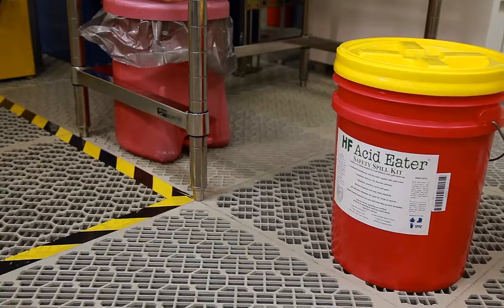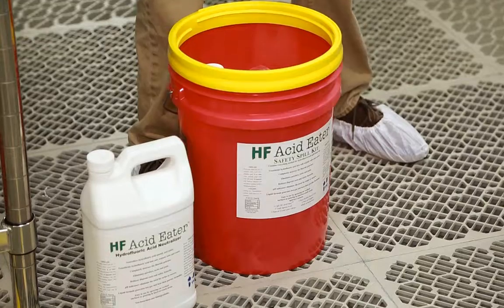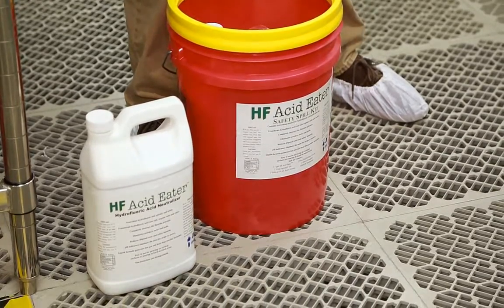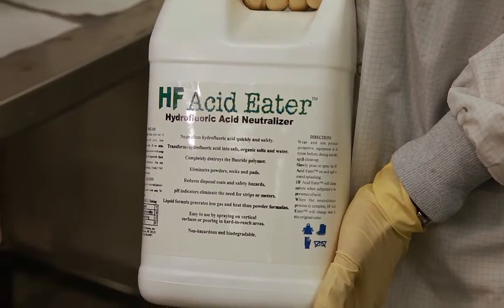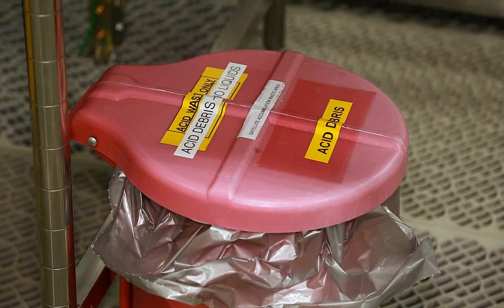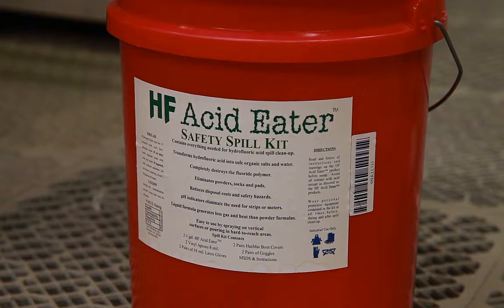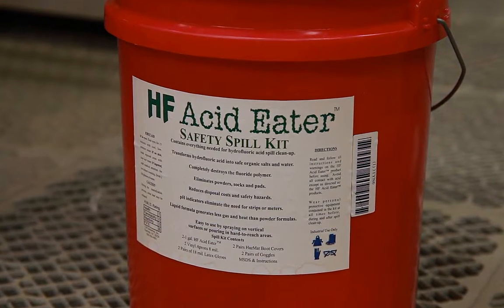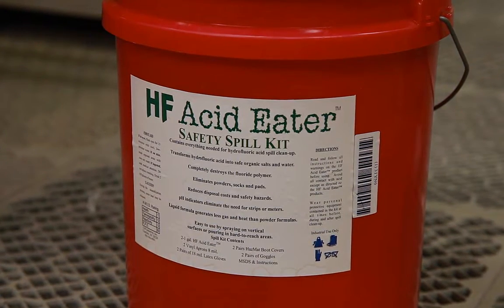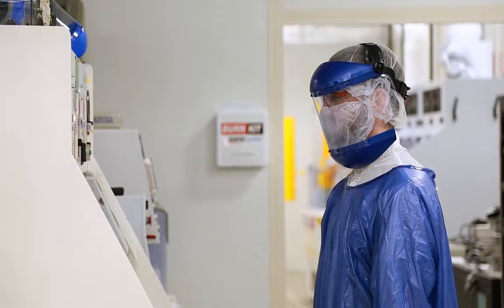HF spill kits shall include fluoride strips, compatible absorbent material, HF-specific neutralizing agent, personal protective equipment, and waste collection containers. Information about how to purchase an HF spill kit and antidote is provided in the course resources folder.